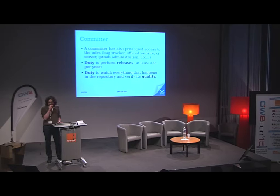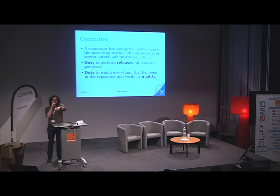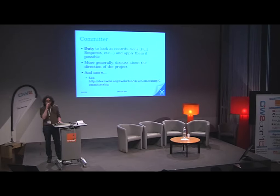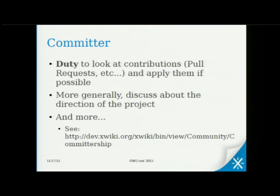Committers also have the duty to watch everything that happens in the repository so they can verify its quality. Every time a change is made in xWiki, many eyes look at the code and say, 'this could be improved,' or 'this is not that good,' or 'this is nice.' Quality is managed thanks to this. We also have the duty to look at contributions — basically pull requests on GitHub — and apply them if possible. When it's not possible, we discuss with the contributor and try to help them create a better contribution.